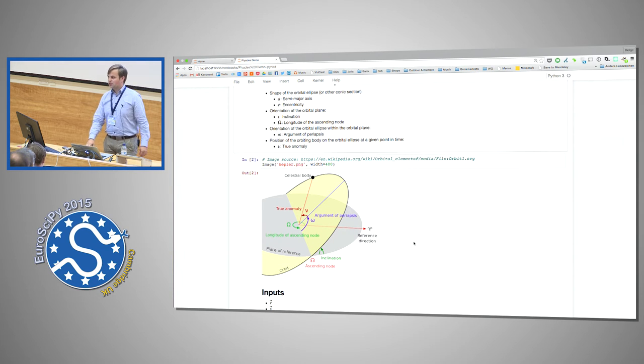So the inclination which is the angle between the plane of reference and the orbital plane. The longitude of the ascending node which is the angle between the reference direction and the node line which is the intersection of the two planes, so how the orbit is located or is rotated towards the reference direction. Then we need to determine the orientation of the orbital ellipse within the orbital plane, and that's the so-called argument of periapsis. And lastly we need to know the position of the orbiting body on the orbital ellipse, and that's the so-called true anomaly.